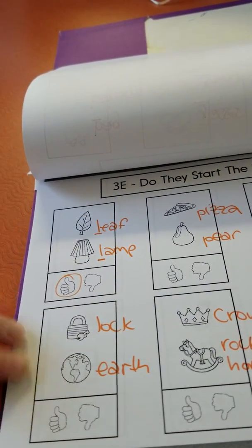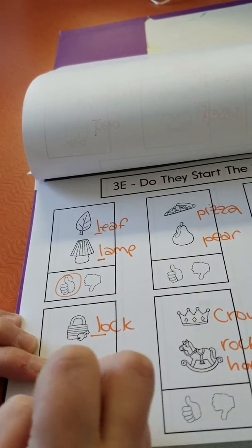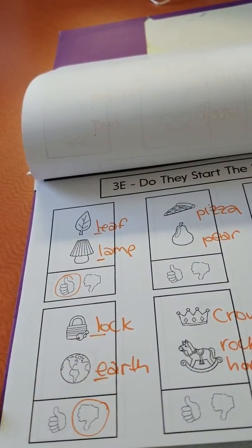Then down here we have a lock and the earth. L-lock, e-earth. That does not sound the same, so we're circling the thumbs down.